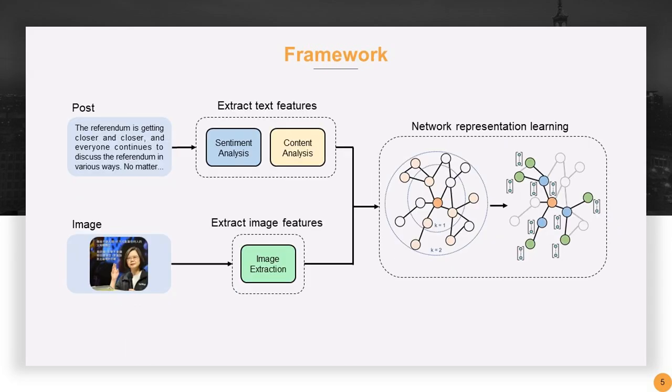In our proposed framework, we divide the input into text and image and extract features from each. For the text part, we use BERT and RoBERTa to obtain text embedding and sentiment probability. For images, we use ViT to obtain embeddings.